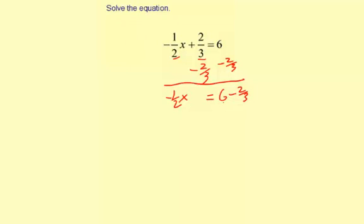To combine, we need a common denominator, so I'm going to take the 6 and multiply by 3 over 3, and that equals 18 over 3.